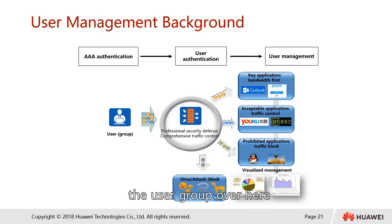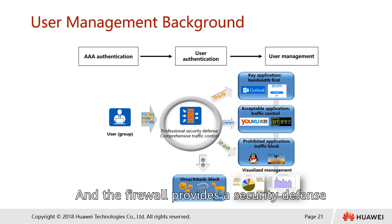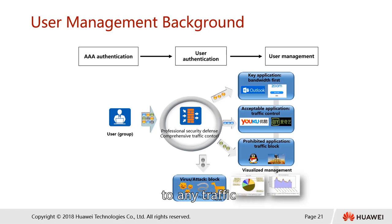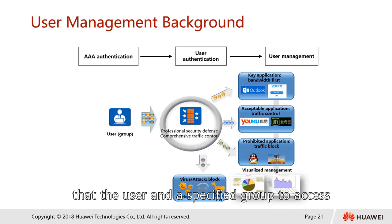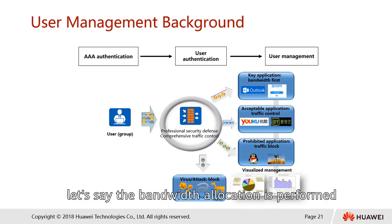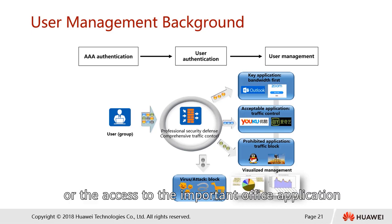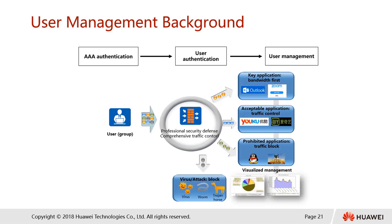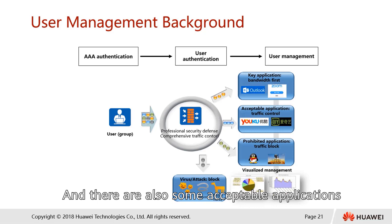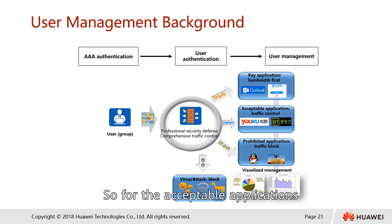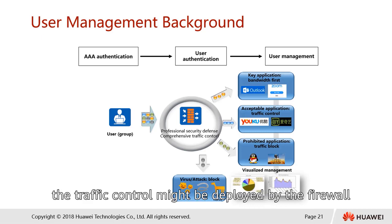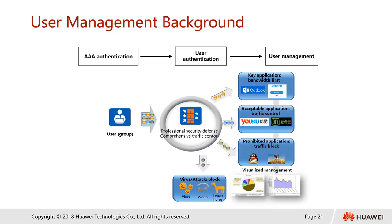For example, the user group might need to go through the firewall, and the firewall will provide security defense as well as traffic control to any traffic that users under a specified group access. Bandwidth allocation is performed on the most important applications such as the main server or access to important office applications. There are also acceptable applications where traffic control may be deployed by the firewall.